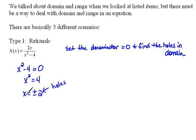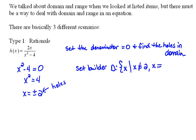When we go to write this as a domain, there are two different ways. The first way is called set builder notation. We say the domain is the set of all x's such that x cannot be 2 and x cannot be negative 2. That's exactly what this notation means: the set of all x's such that, and then here's our rule.